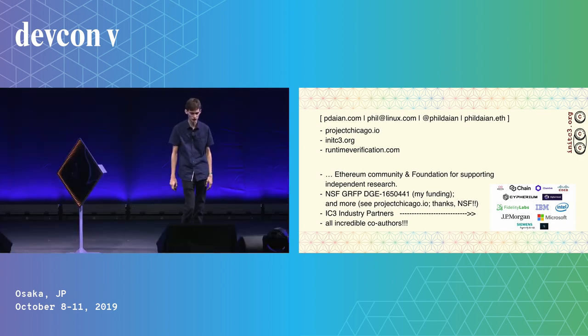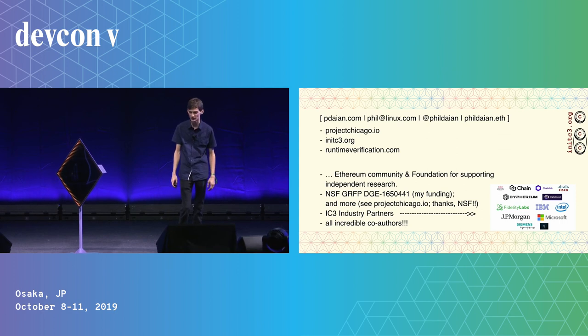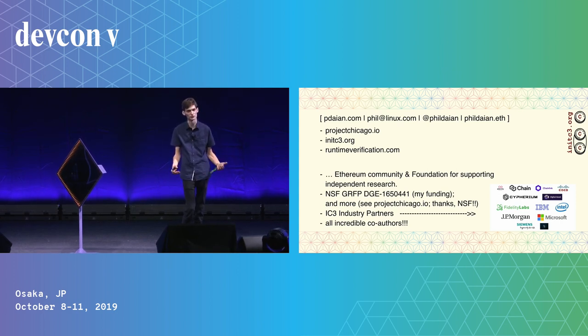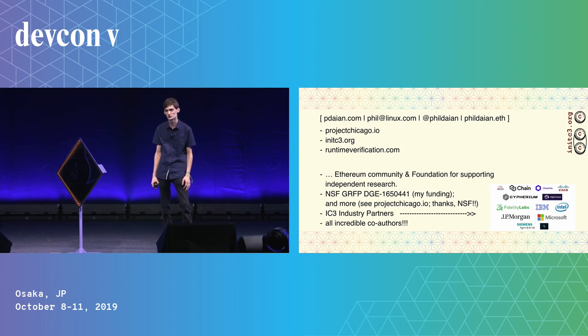If you're interested in learning more about the technical details or want to use this in your anti-bribery systems, please feel free to reach out. It's a very complex topic and I only had 20 minutes — hopefully you got the takeaway that we can ensure users own their own data in these systems, which is critical to ensuring they're not being bribed. Thanks to all our IC3 partners and the Ethereum community for their support in this research.